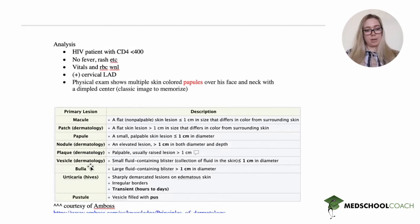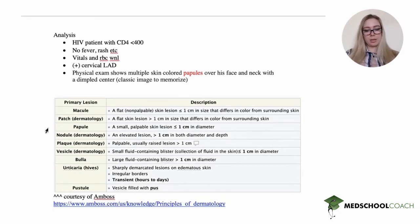A plaque is raised, greater than one centimeter. Nodules, plaques, vesicles—the rest of these you can feel, they're palpable. A vesicle is less than one centimeter and a bulla is greater than one centimeter. Then you can have hives and pustules, but it's the macule, patch, papule, nodule, plaque that are kind of difficult.